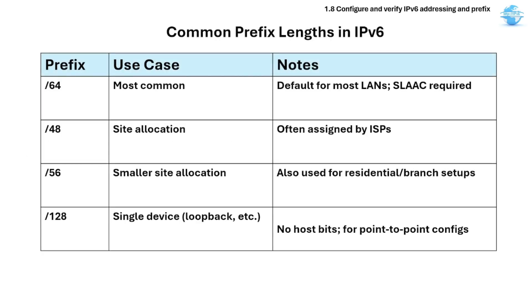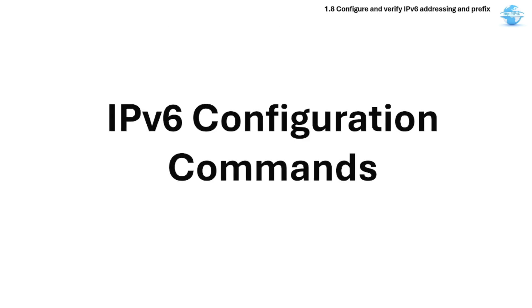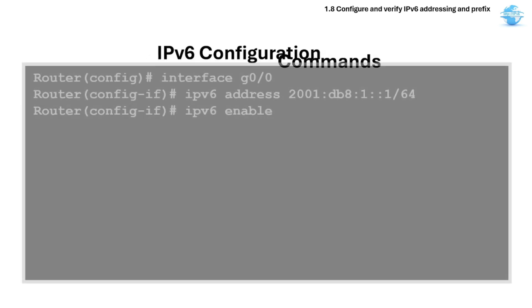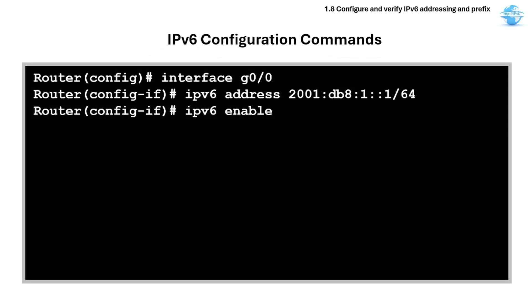Here are the common prefix lengths in IPv6. Here are the IPv6 Cisco commands. These commands assign an IPv6 address to an interface, and don't forget to enable IPv6 after.